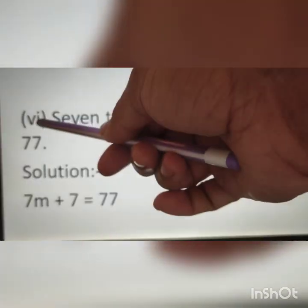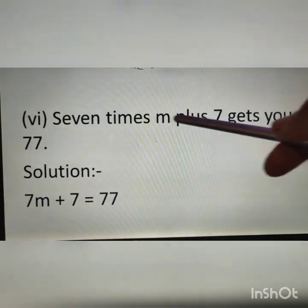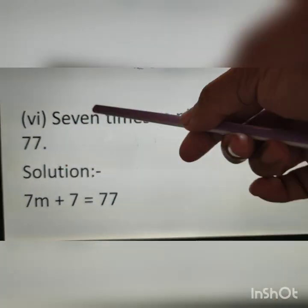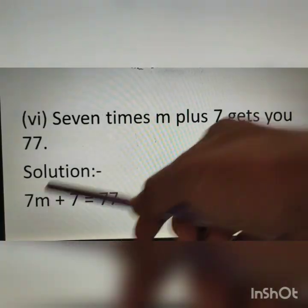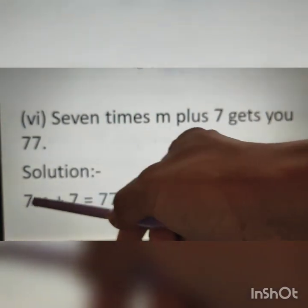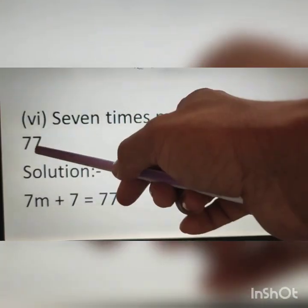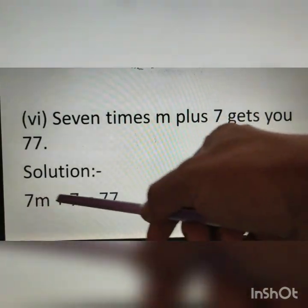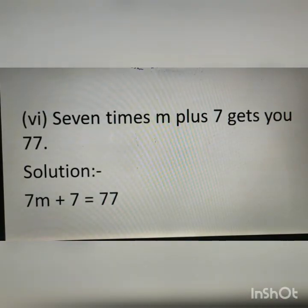Question number 6: 7 times m plus 7 gets you 77. 7 times m means 7 into m, plus 7. 7 into m plus 7 gets you 77. Therefore, the equation is 7m plus 7 is equal to 77.